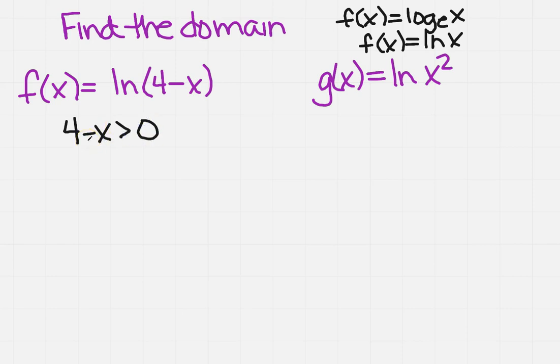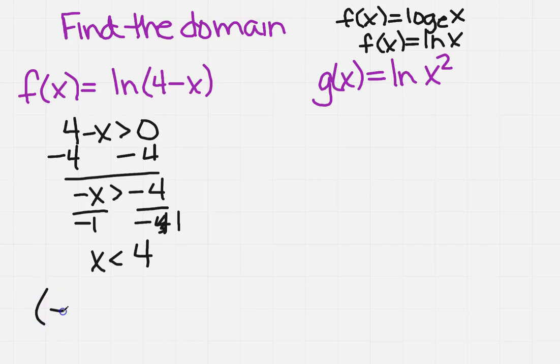Now I want to get x all by itself, so remember I need to subtract 4 from both sides. I get minus x is greater than minus 4. I need to divide by negative 1 on both sides. When you divide by a negative, you have to flip the inequality. And you'll get x is less than 4. So that means that my domain is going to be from negative infinity to positive 4, not including it.